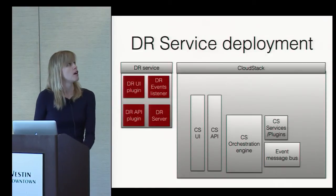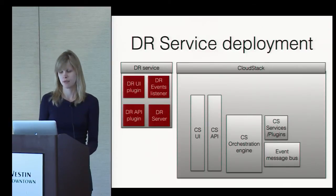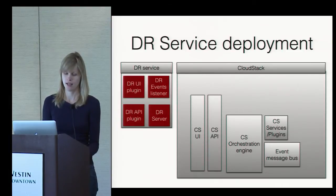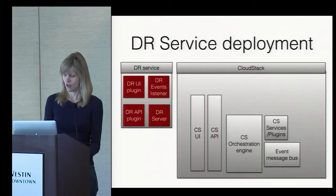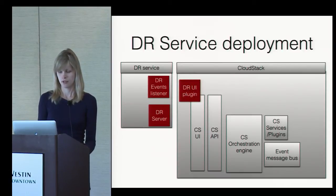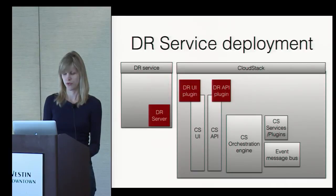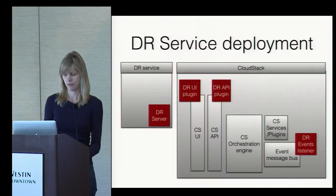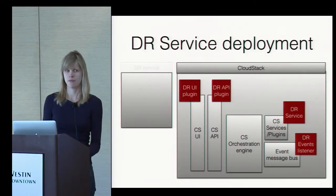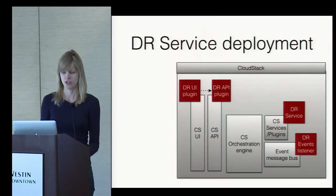The cloud stack DR service deployment consists of four parts: a DR UI plugin, API plugin, DR server, and DR events listener. On installation, each part is moved to the appropriate cloud stack location, and it runs as part of the cloud stack process.